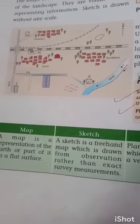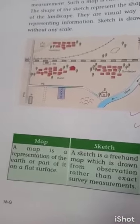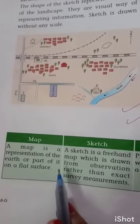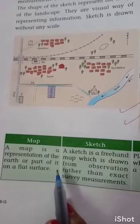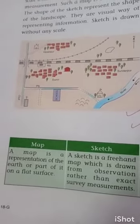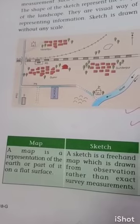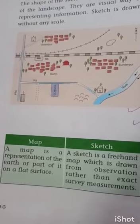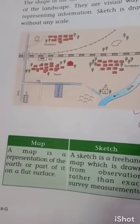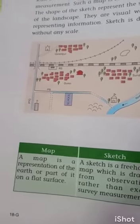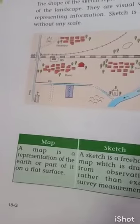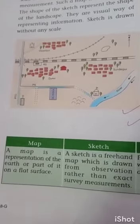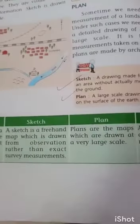Now, what is a map? A map is a representation of the earth or part of it on a flat surface.